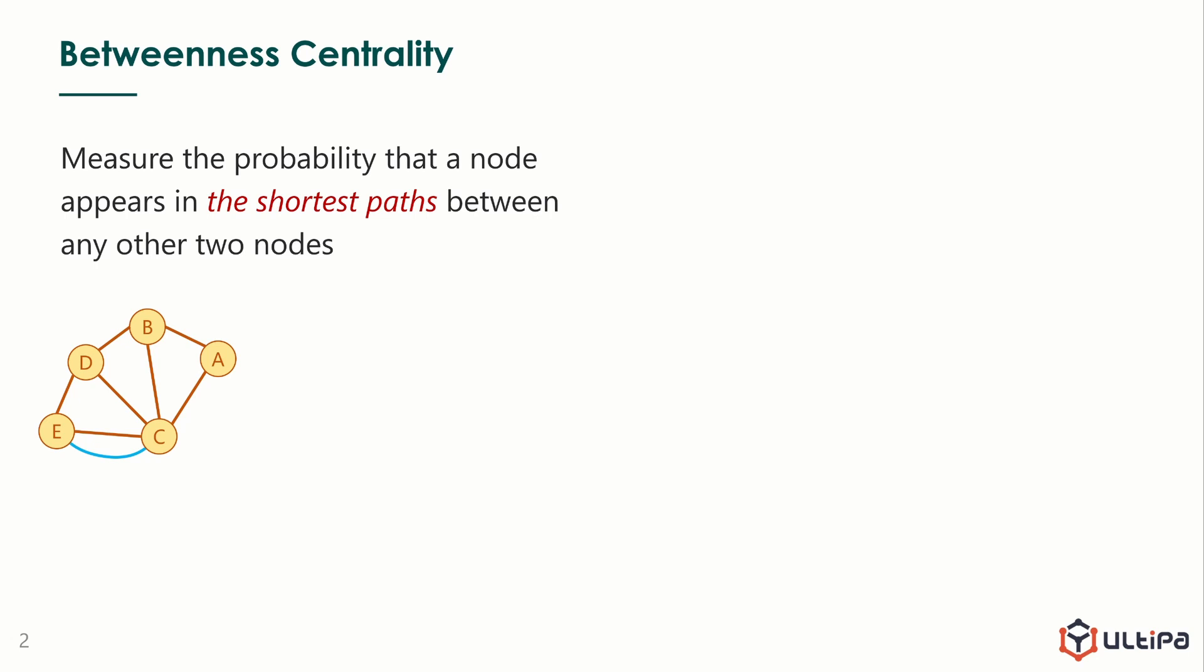The example graph here is undirected. There are two edges between nodes C and E and we use different colors to differentiate them. We will walk through the process to calculate betweenness centrality of node C.